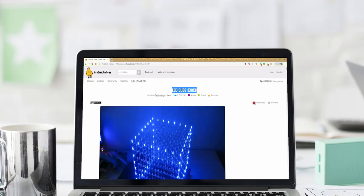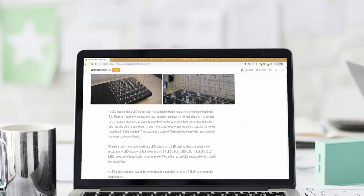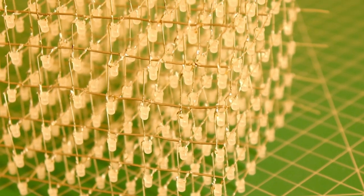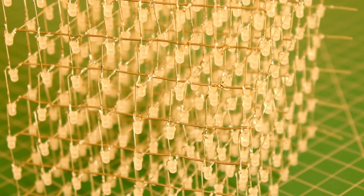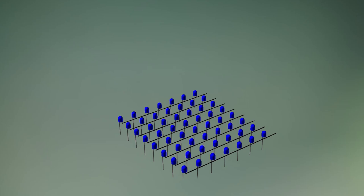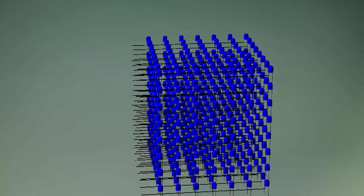Instructables users are the 2 projects for this video. Check the time for your time. Let's check the 8x8 LED cube. 8 rows, 8 columns, 8 individual layers. 512 LEDs.